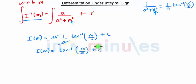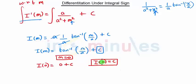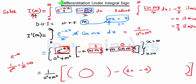We have to find the constant C, so we put m equal to 0. We get I(0) = tan⁻¹(0) + C = 0 + C, so I(0) = C. Now we need to find I(0) by going back to the original equation and substituting m equal to 0.